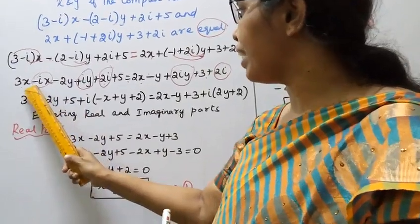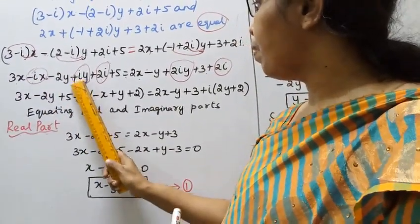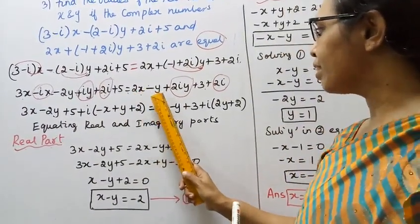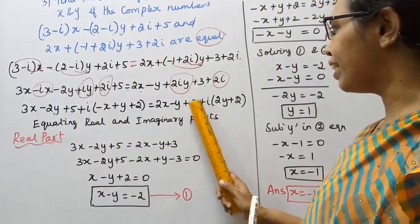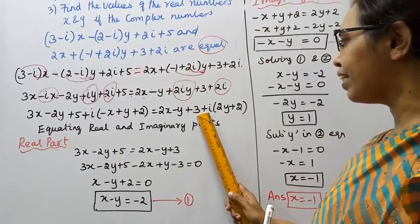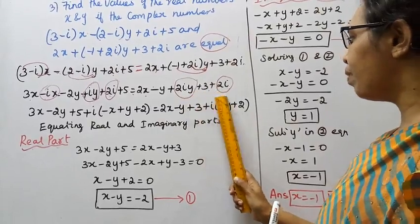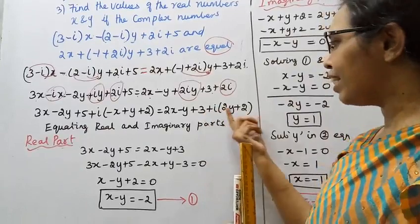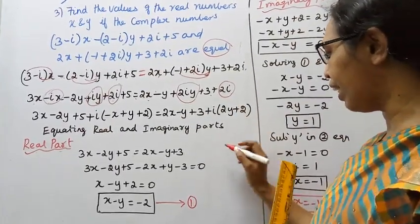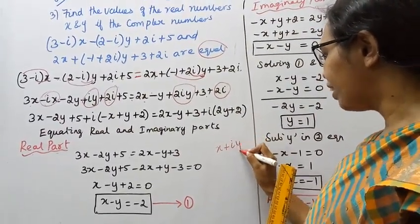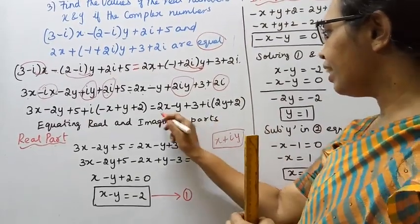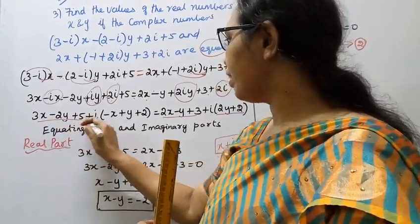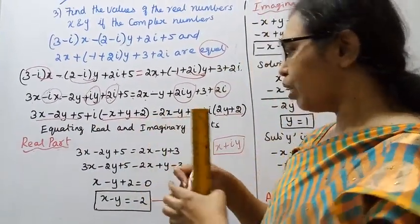Identifying the parts clearly: left-hand side real part is 3x minus 2y plus 5, imaginary part is minus x plus y plus 2. Right-hand side real part is 2x minus y plus 3, and imaginary part is 2y plus 2. This sets up our equating of real and imaginary parts.